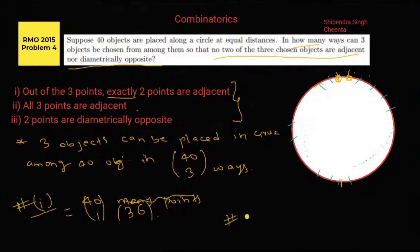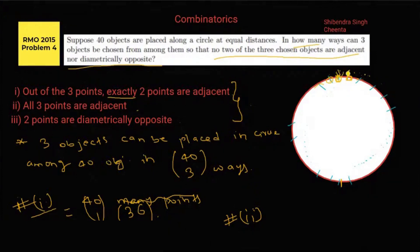The number of ways in which Case 2 occurs — all three points are adjacent — is found by taking the middle corner as reference. The middle corner can be any of the 40 points, so there are 40 possible cases. Thus, Case 2 = 40.